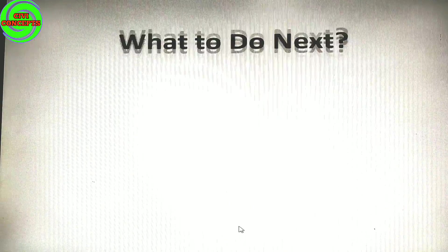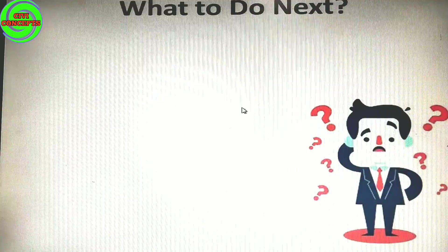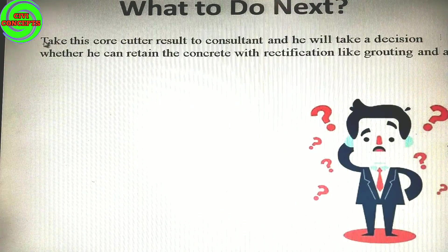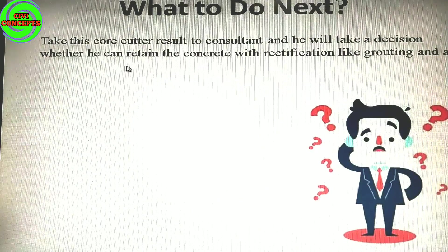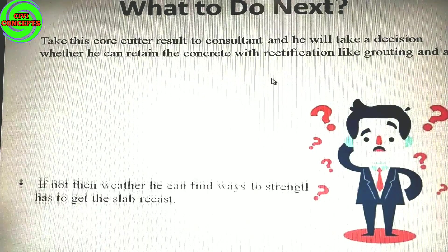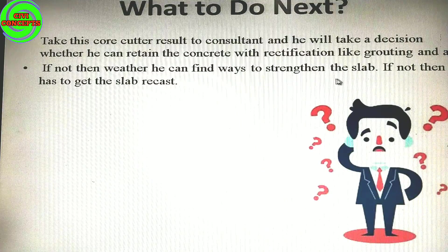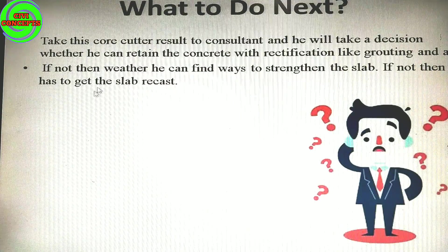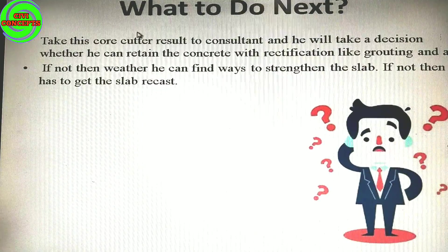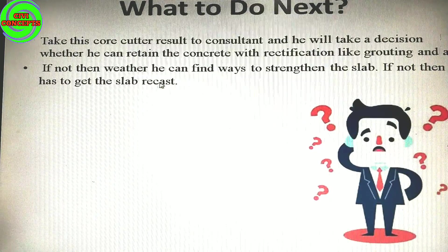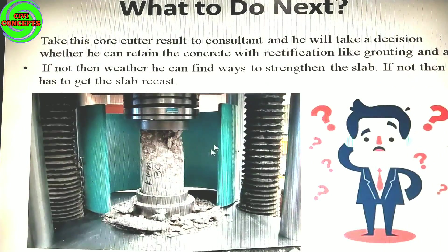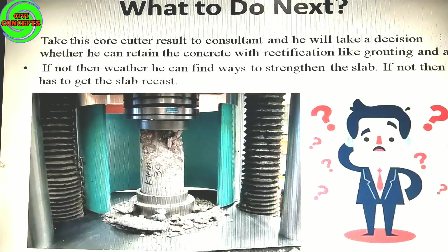After core testing, take the core cutter result to the consultant. He will decide whether to retain the concrete with rectification like grouting and other safety measures, or find a way to improve the strength of the slab. If improvement is not possible, then the slab has to be recast — dismantled and poured again if the core testing report also fails.